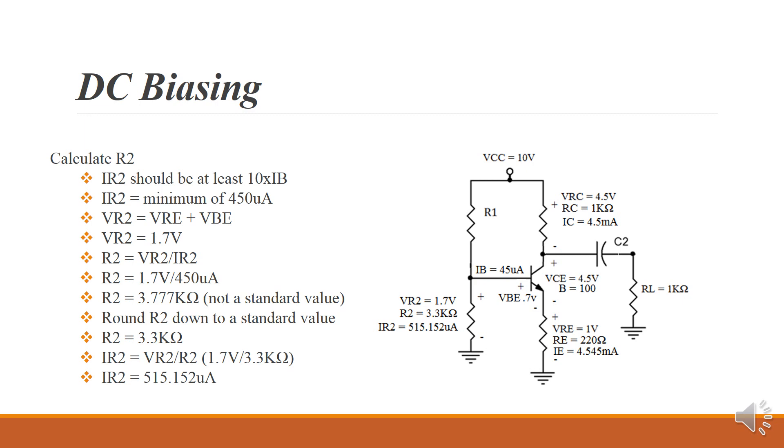What we're going to do now is we're going to round that down to the next standard value, which gives us, for our example, 3.3k ohms. Now I can take that, divide it into the 1.7 volts, and that gives us our actual IR2, 515.152 microamps.